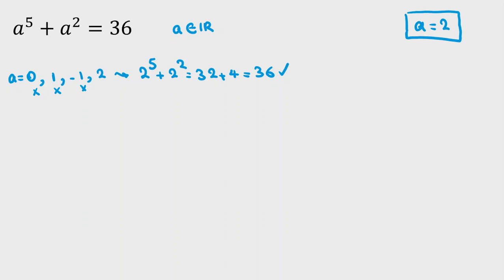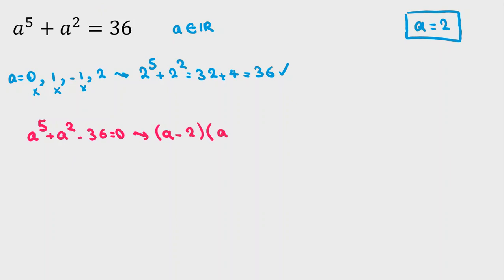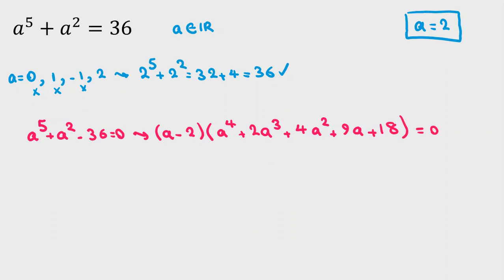One approach is to factorize and use the fact that a = 2 is a root. Taking everything to the left hand side: a to the 5 plus a squared minus 36 equals 0. We can factor out (a minus 2), giving (a minus 2) times (a to the 4 plus 2a cubed plus 4a squared plus 9a plus 18) equals zero. So a = 2 is one part, and now we focus on the quartic factor: a to the 4 plus 2a cubed plus 4a squared plus 9a plus 18 equals 0.